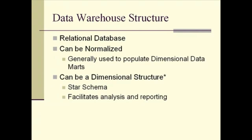The data warehouse structure is what we're looking at today, and we're going to contrast it with a typical relational database structure that is highly normalized. The data warehouse itself does sit in a relational database world. Some data warehouses can use normalized structures like those in operational systems, in which case the data warehouse is generally used to populate other data marts of a dimensional structure. We're going to be discussing the dimensional structure, sometimes referred to as a star schema, where the way tables are organized and relationships are developed is different — all to facilitate analysis and reporting rather than data collection.